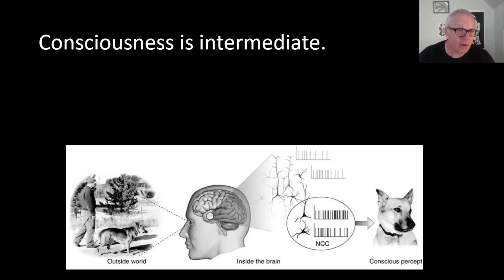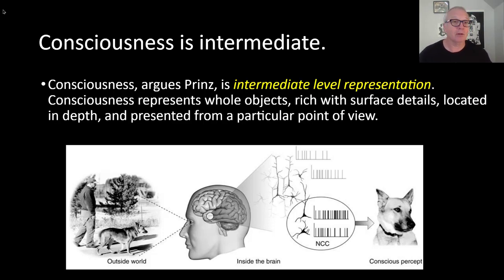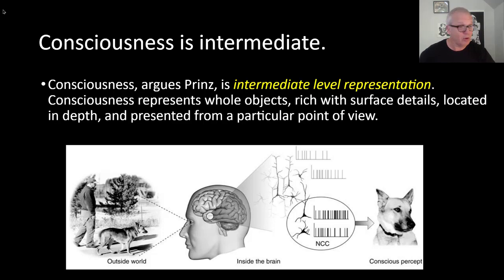Prinz's thesis, stated relatively simply at this stage, is that consciousness is an intermediate-level representation. What we're after is the sort of consciousness that you have when you represent whole objects that are rich with surface detail, located in depth, and presented from a particular point of view. That's vague and deliberately ambiguous. Prinz has a lot of work to do to unpack what that means and be more specific about it, and he's going to locate his position right in the midst of all these other positions we've been looking at — like Dennett, Dehaene and Naccache, and Christophe Koch.